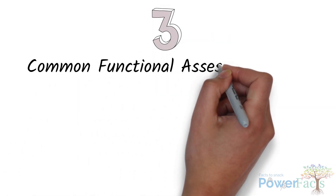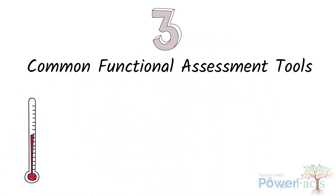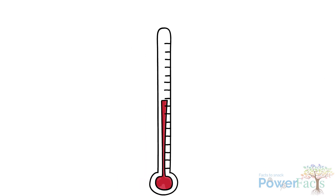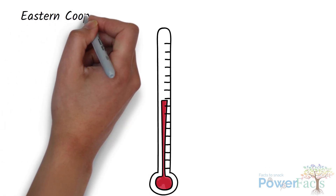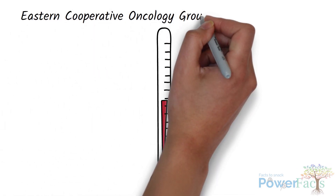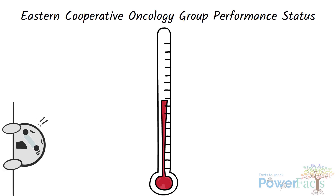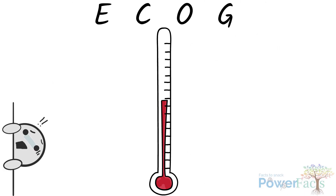There are three common functional assessment tools used in palliative care. Firstly, we have the Eastern Cooperative Oncology Group performance status — quite a mouthful, but we can call it ECOG in short.